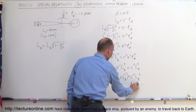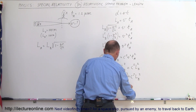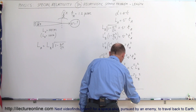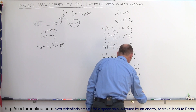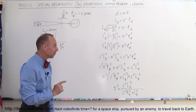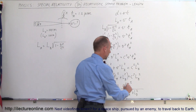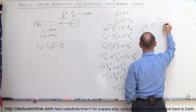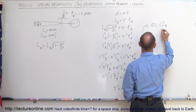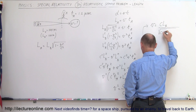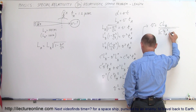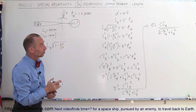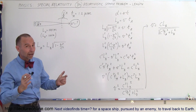Dividing both sides by the bracketed quantity gives V squared equals C squared times L sub B squared divided by (C squared times T sub A squared plus L sub B squared). Taking the square root of both sides, V equals C times L sub B divided by the square root of (C squared times T sub A squared plus L sub B squared). Now V is expressed in terms of everything we know: C, L sub B, and T sub A.